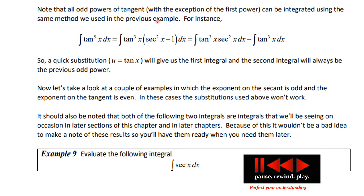Note that all odd powers of tangent, with the exception of the first power, can be integrated with the same method. For example, with tangent to the fifth we break it into tangent cubed times tangent squared, distribute, and then we already know how to integrate tangent cubed, while the other part uses the substitution u equals tangent x. That's actually pretty straightforward.